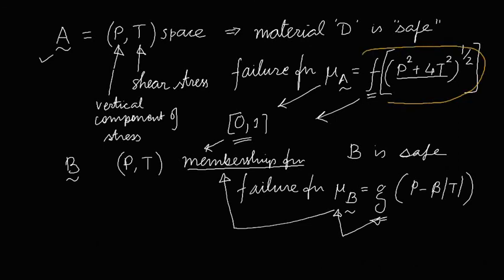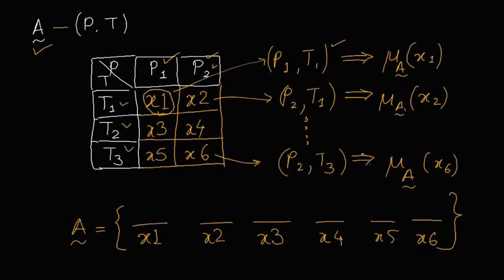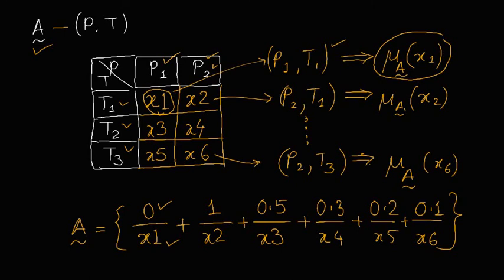Mu A will be evaluated. And suppose that comes out to be 0, 1, 0.5, 0.3, 0.2 and 0.1. These are elements and these are corresponding membership functions.